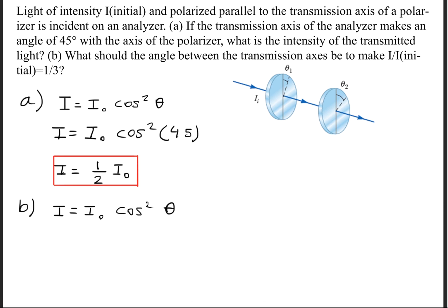once again, we're going to use Malus's Law, and what we'll go ahead and do is we'll divide the initial intensity to both sides so that we get I over I₀ is equal to cosine squared theta.